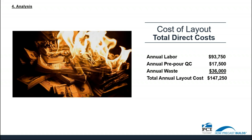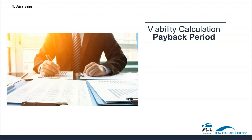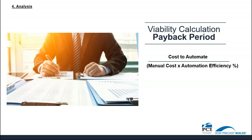This viability calculation determines payback period using the hard costs we just calculated contrasted with the cost to automate. The calculation is the cost to automate divided by the manual cost times the automation efficiency percentage. With the cost to automate at $200,000 in this example, divided by the manual cost of $147,250 and an automation efficiency percentage of 75%, the result is a 1.81-year payback.